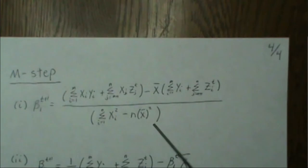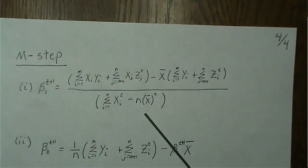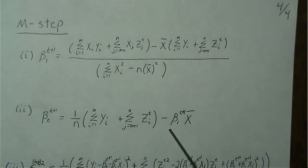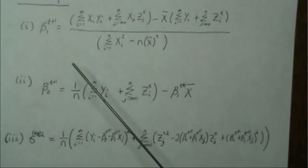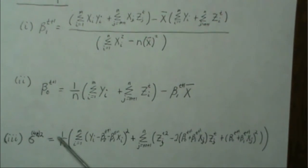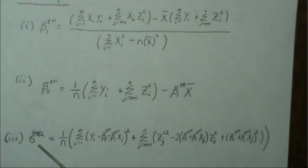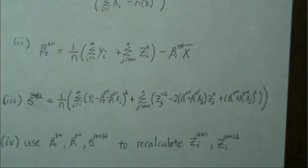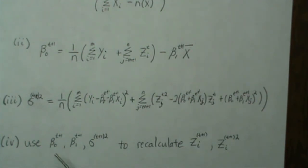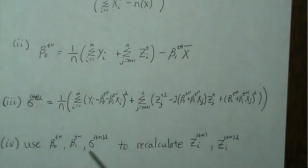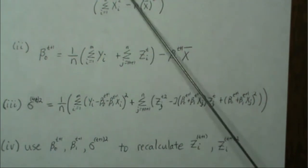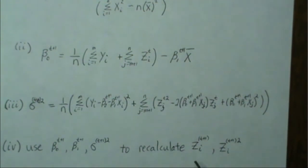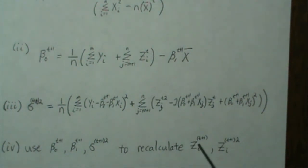The M-step proceeds: we estimate beta_1 first using zi^t, then estimate beta_0 using the updated beta_1, and then estimate sigma squared using both. To repeat: before the first iteration we used initial guesses for beta_0, beta_1, and sigma squared to compute zi^t. Now we update those with the new estimates, then recompute zi^(t+1) and zi^(t+1) squared, and repeat until convergence.